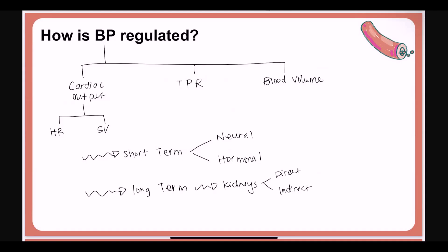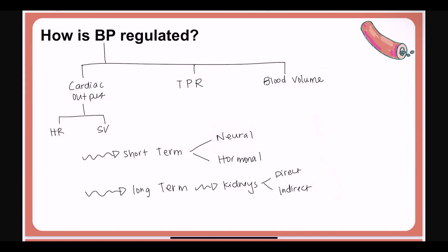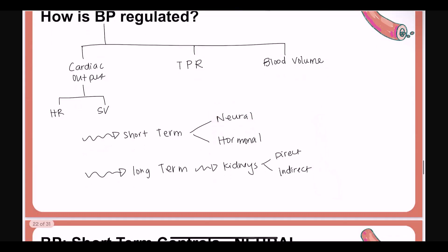Sometimes blood pressure is sustained too high or too low, and then we'd need a longer-term solution — those are long-term controls, done by the kidneys. Long-term controls can be either direct or indirect effects on blood pressure. So let's jump in — we're going to start with short-term controls, the neural ones.